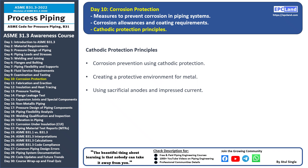Sacrificial anodes: one method of cathodic protection is the use of sacrificial anodes. These anodes are made from a metal that is more easily corroded than the pipe material — the sacrificial anodes corrode in place of the pipe, protecting it. Impressed current systems: another approach is using impressed current systems, where a direct current is applied to the pipe, which counteracts the natural tendency for corrosion to occur. Cathodic protection is an essential tool in corrosion prevention, especially in environments where pipes are exposed to soil, water, or other corrosive substances.